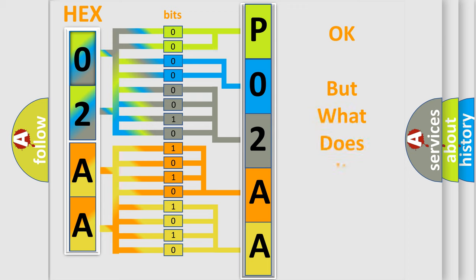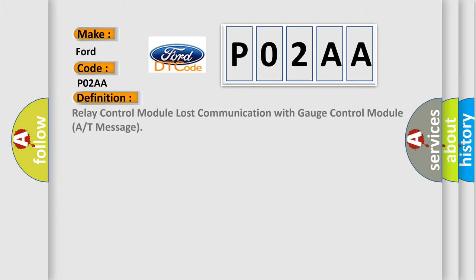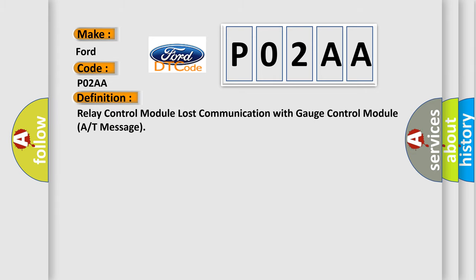We now know how the diagnostic tool translates received information into a more comprehensible format. The number itself does not make sense to us if we cannot assign meaning to what it actually expresses. So, what does the diagnostic trouble code P02AA interpret specifically for Infiniti car manufacturers?